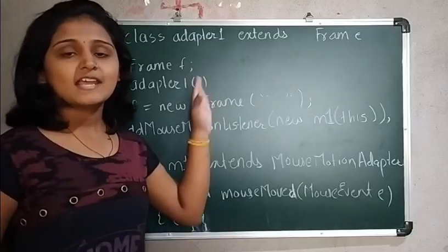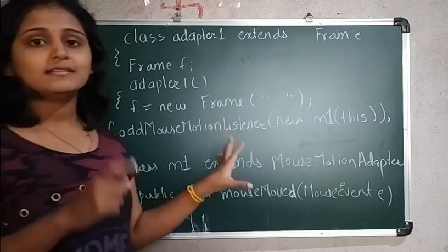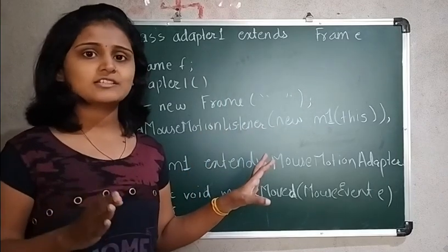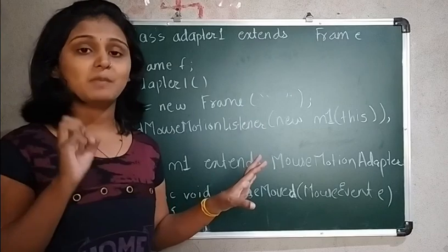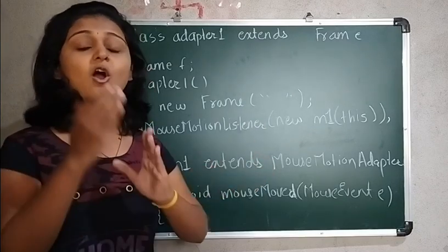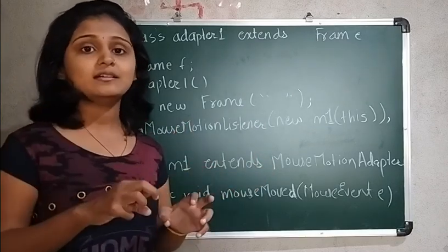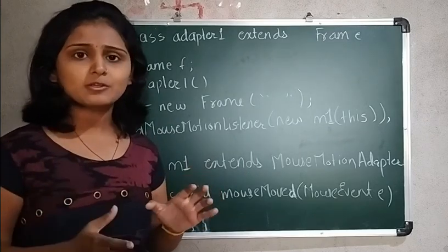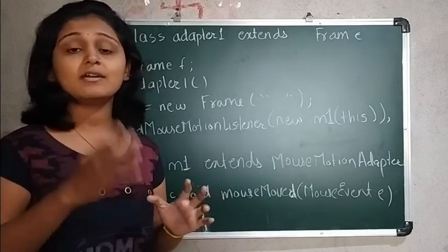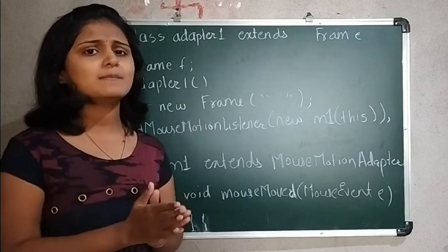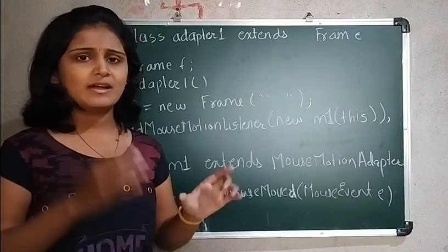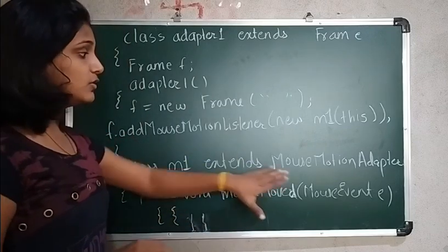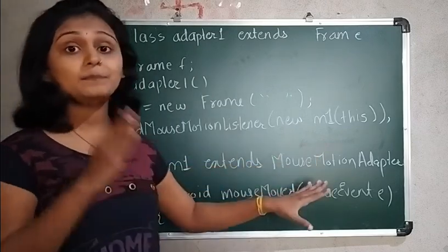Here I have taken one example regarding the adapter. In the previous practical session I covered the mouse event where we overrode all the methods that come under the MouseListener, because as per the rule we had to override all methods even if we only needed one or two. Many times we only need one or two methods as per the requirement, so for that purpose we use the adapter classes.